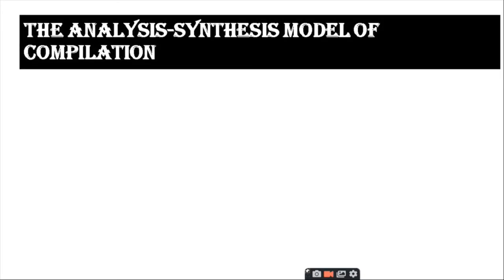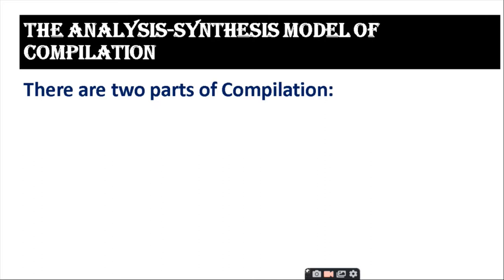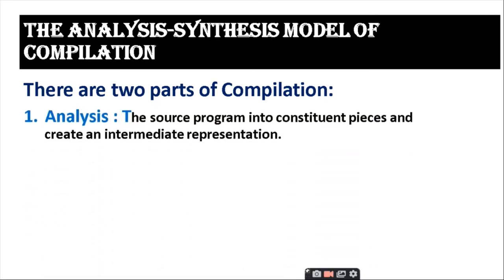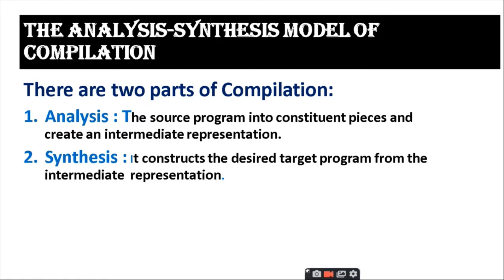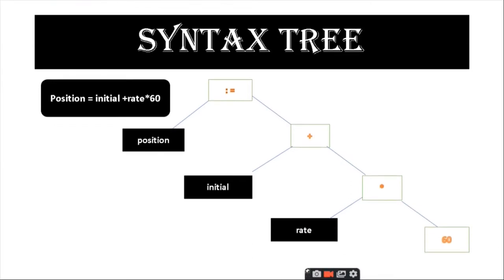The analysis-synthesis model of compilation has two parts. The first is analysis, where the source program is broken into constituent pieces and an intermediate representation is created. The second is synthesis, where the desired target program is constructed from the intermediate representation. A special kind of tree called a syntax tree is used, where each node represents an operation and the children represent the arguments. For example, the expression: position = initial + rate * 60.